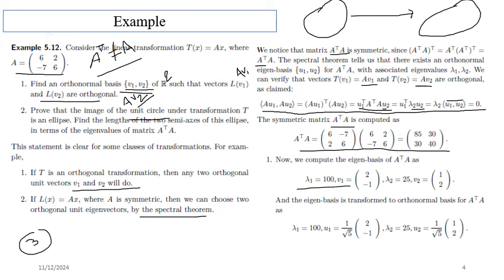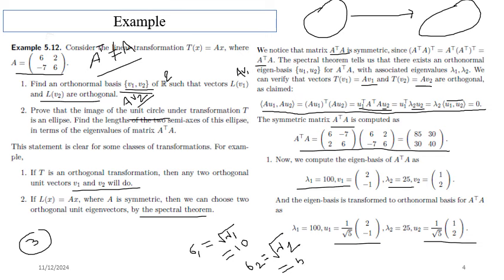For the non-symmetric square matrix example, we compute the product matrix — which is symmetric, as the off-diagonal elements are equal. The first (largest) eigenvalue is 100 and the second is 25. With respect to eigenvalue 100, we get one eigenvector, and with respect to 25, another eigenvector. The singular values are square roots of these eigenvalues: sigma 1 equals square root of 100 equals 10, and sigma 2 equals square root of 25 equals 5.